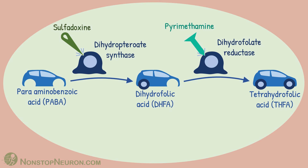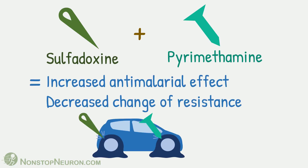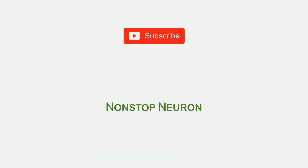So that was the detailed explanation. The final answer is: sulfadoxine plus pyrimethamine equals increased anti-malarial effect as well as decreased chance of resistance. If you found this video helpful, please share it with your friends. Also, check out other videos on drug combinations, and don't forget to subscribe because lots more is to come. Thanks for watching, see you in the next video.